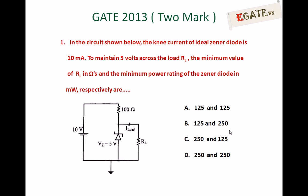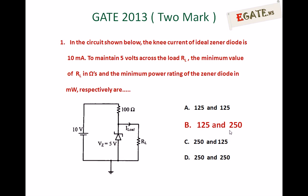The question again: In the circuit shown below, the knee current of the ideal Zener diode is 10 mA. To maintain 5V across the load RL, the minimum value of RL in ohms and the minimum power rating of the Zener diode in milliwatts respectively are. The correct answer is B: minimum value of RL is 125 ohms and minimum power rating of the Zener diode is 250 milliwatts.